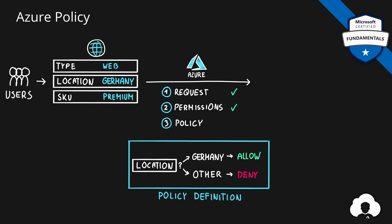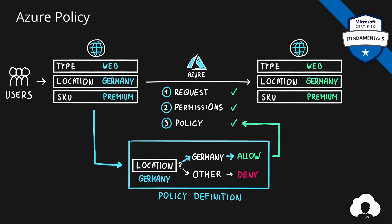And once this policy definition is created and then assigned to an Azure scope, let's say Azure subscription, it will be active and will validate all of the deployments that will happen within this specific scope. In our example, this means all the properties from our request will go to the policy definition. In this case, the location is Germany. Therefore, we will allow for this deployment, and Azure will create our resource.